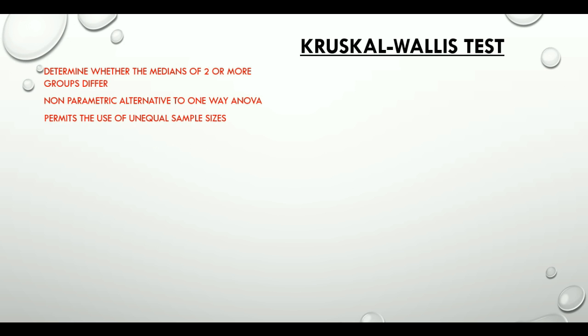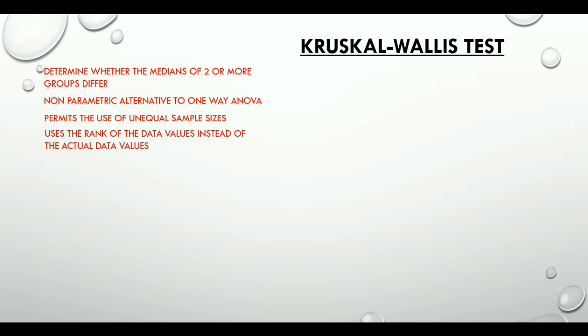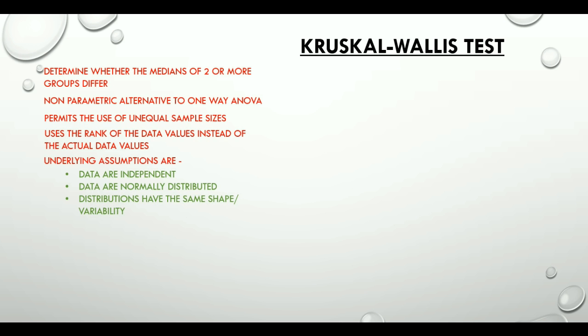This test uses the rank of the data values instead of the actual data values. The underlying assumptions for this test are independence of observations, normally distributed data, and distributions with the same shape or variability.